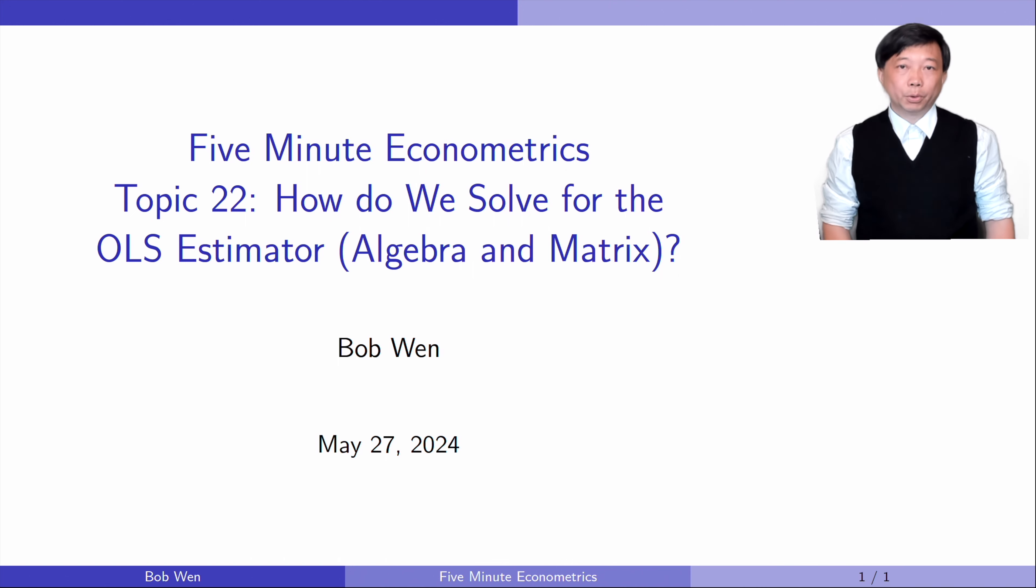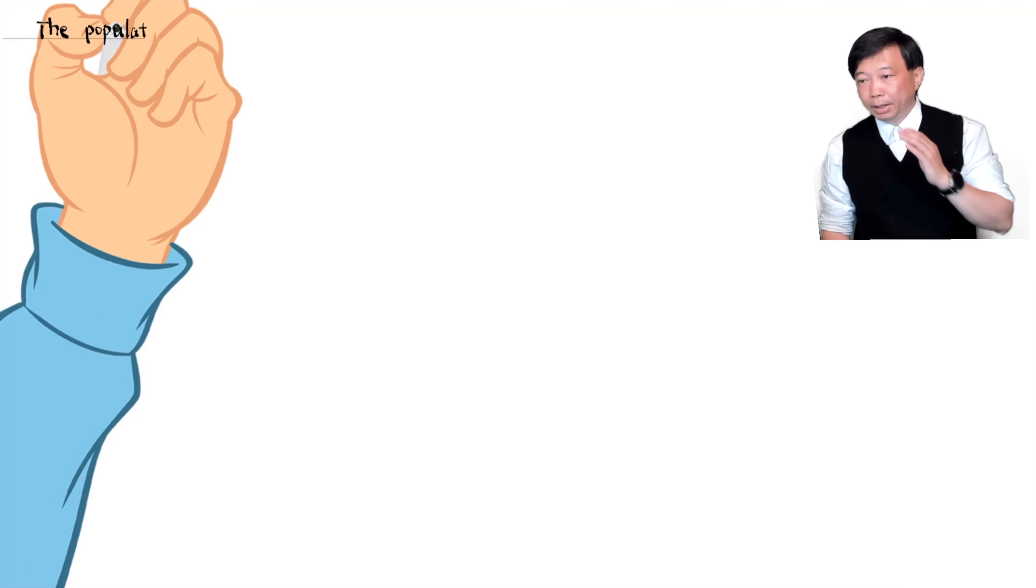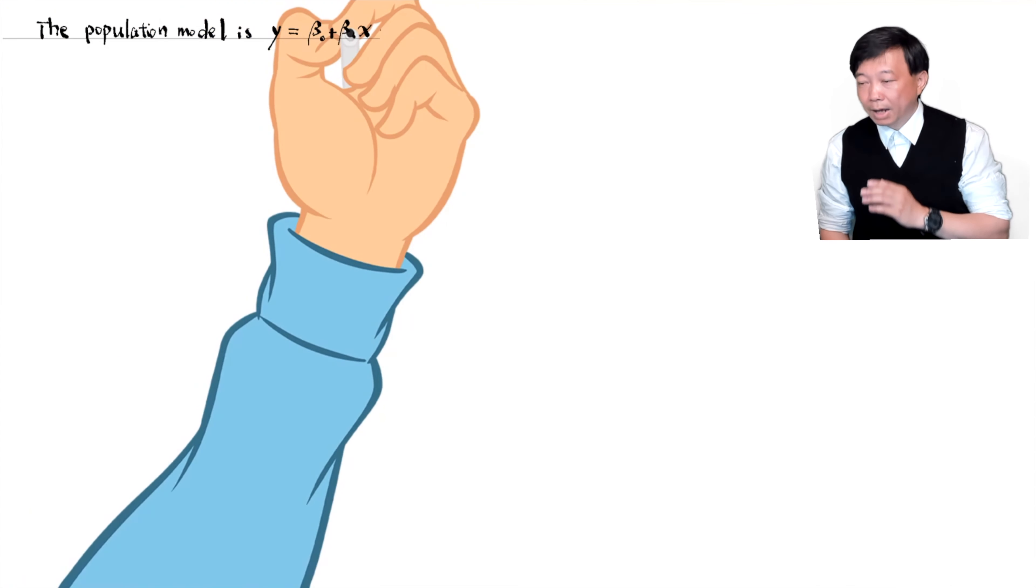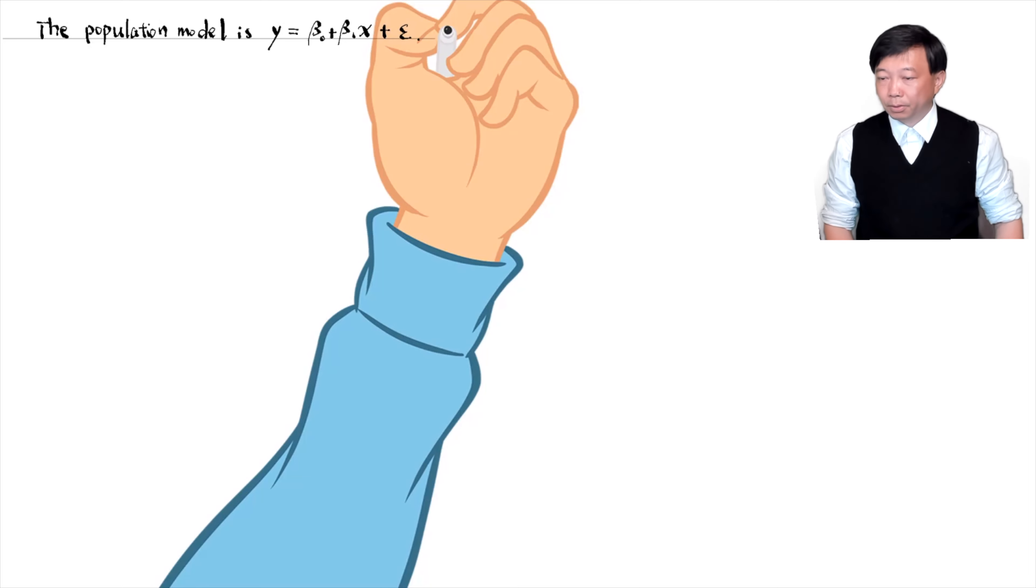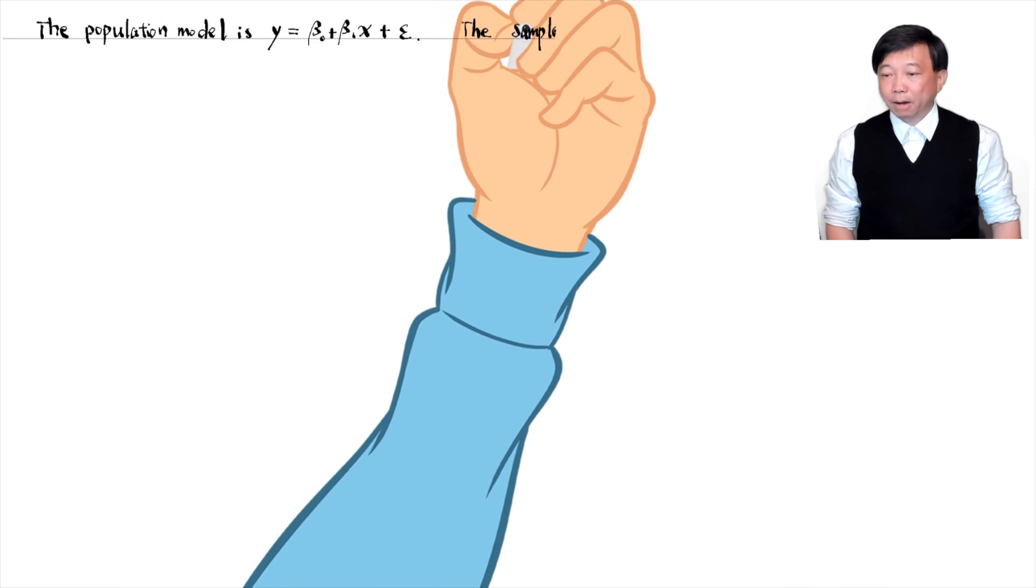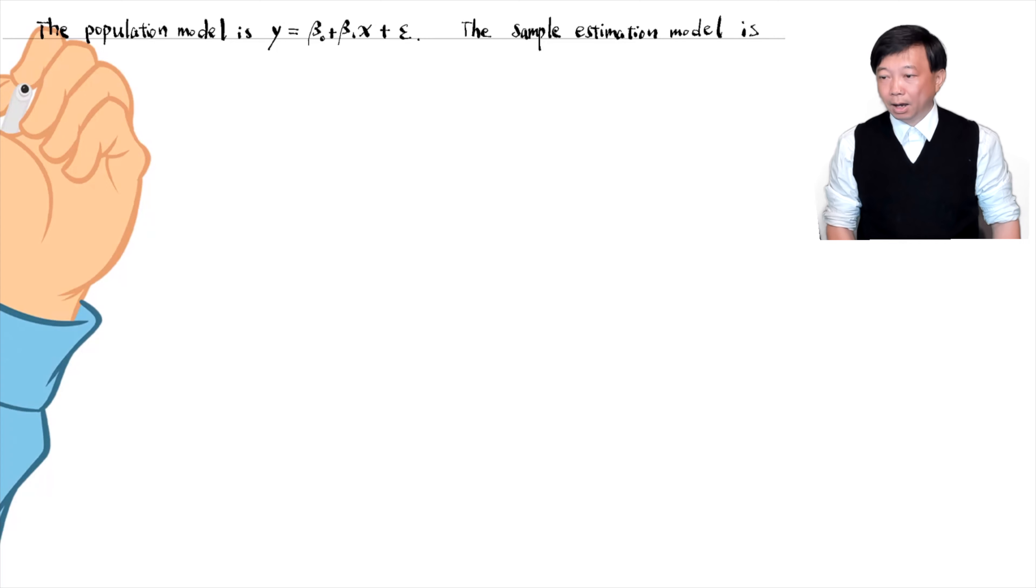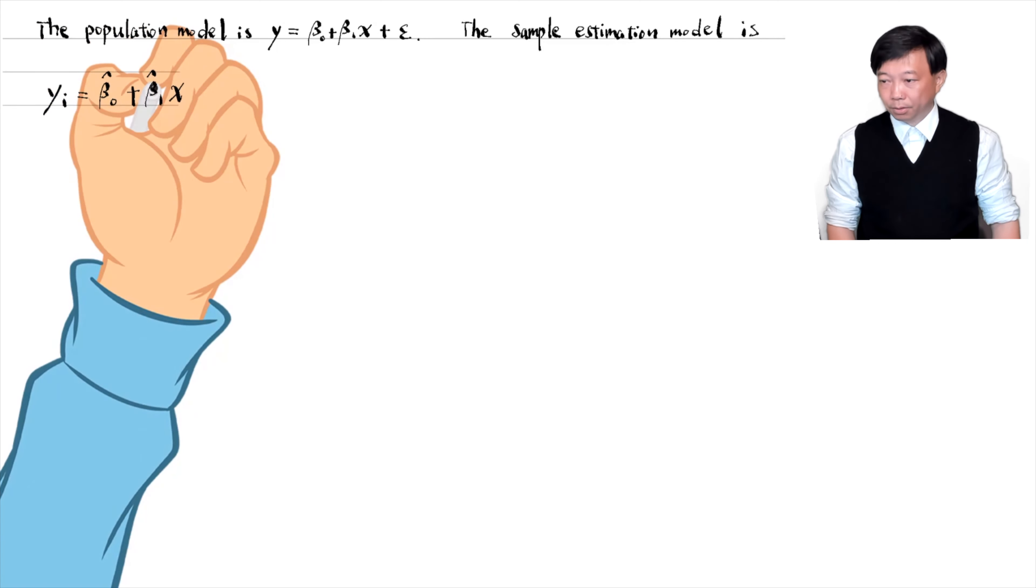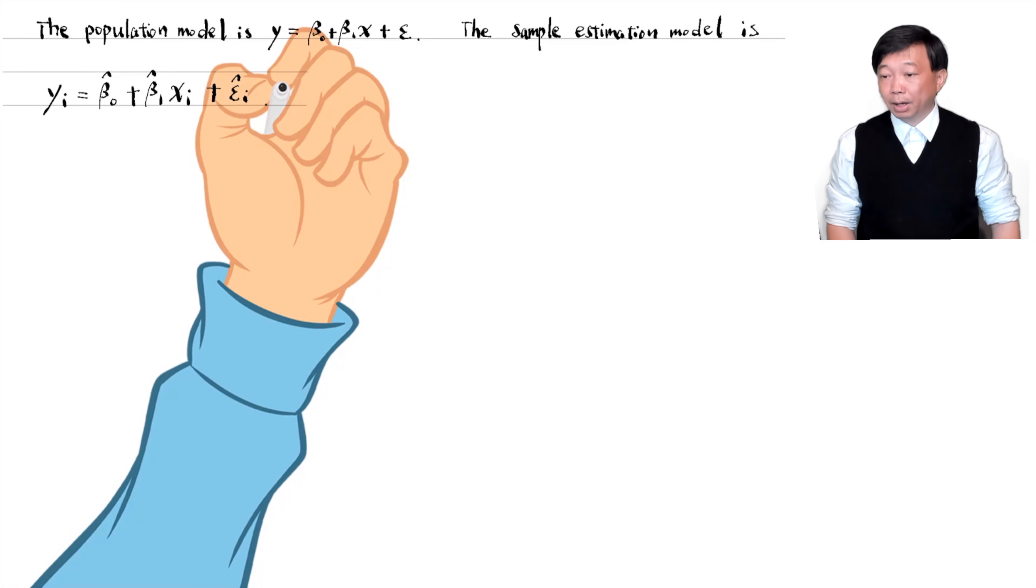The simple regression model has only one explanatory variable. The population model is y equals beta 0 plus beta 1 times x plus epsilon. The corresponding OLS estimation model is yi equals beta 0 hat plus beta 1 hat times xi plus epsilon i, where i is from 1 to the sample size n. It is written as the individual observation form.